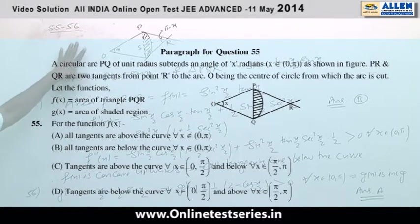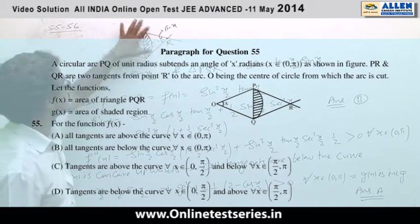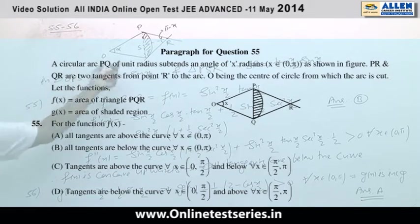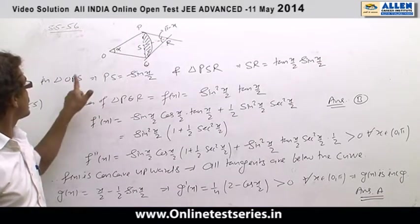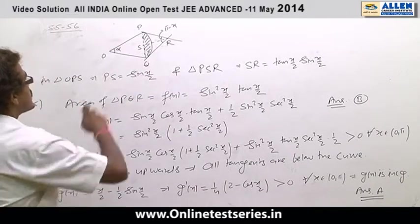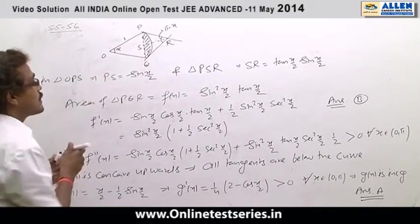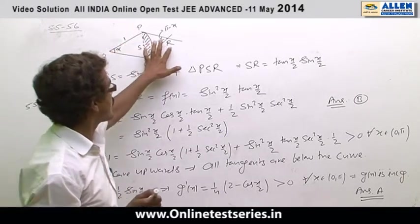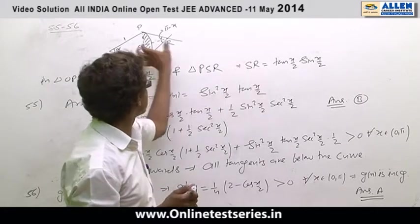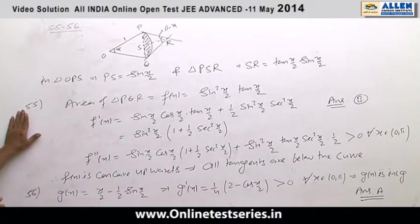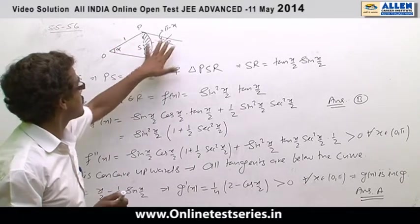Now in the last paragraph there is a sketch and some functions are defined according to this. These two are tangent to the point PQ of this arc. By triangle POS, because this radius is 1, PS equals sin of x by 2. By triangle PSR, we can conclude that length SR equals tan x by 2 times sin x by 2.